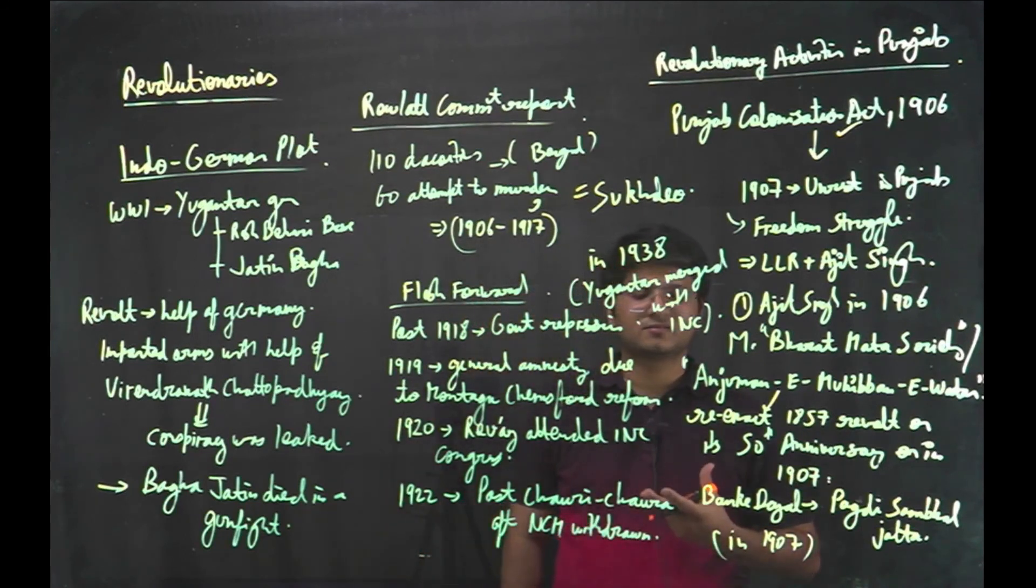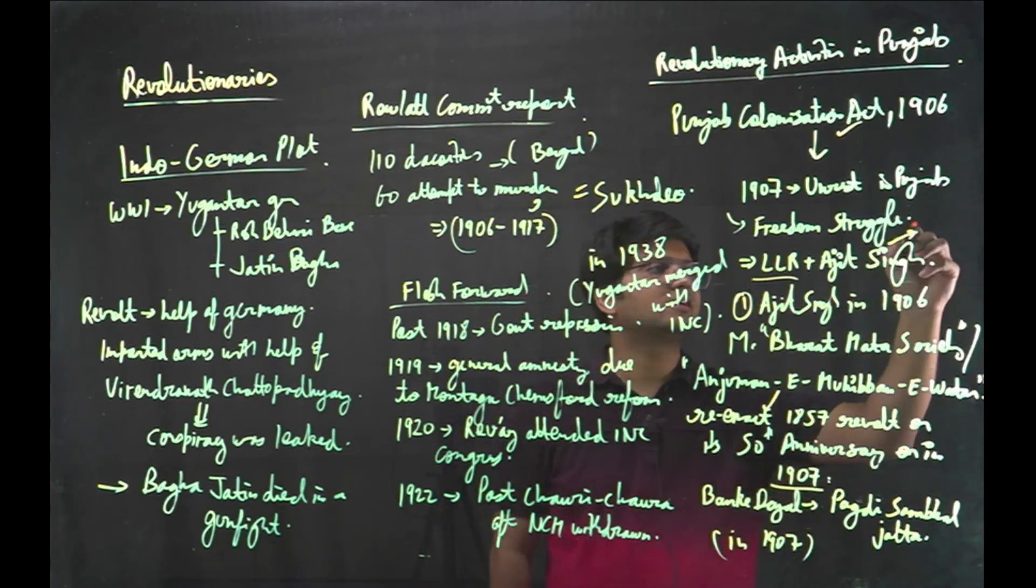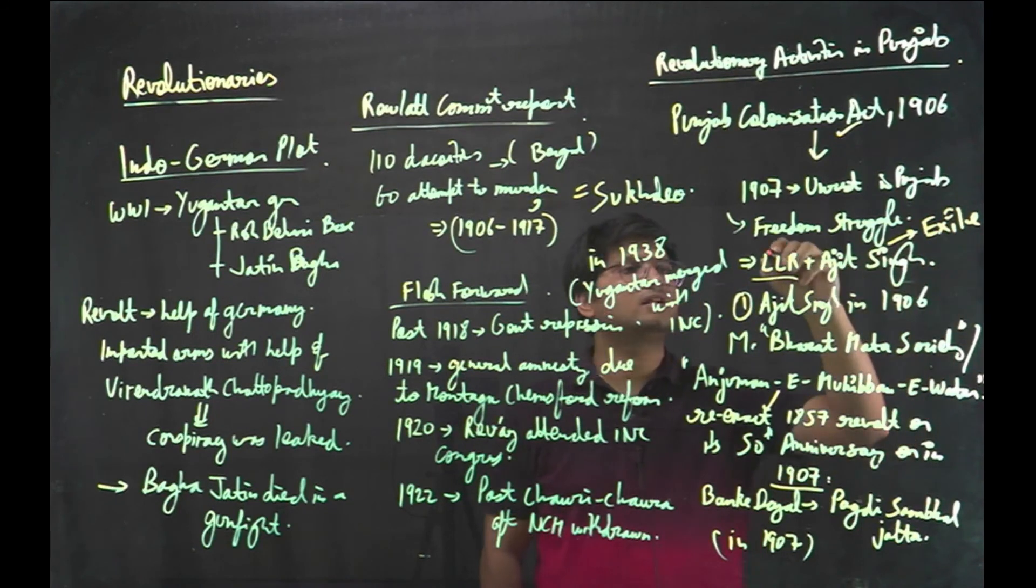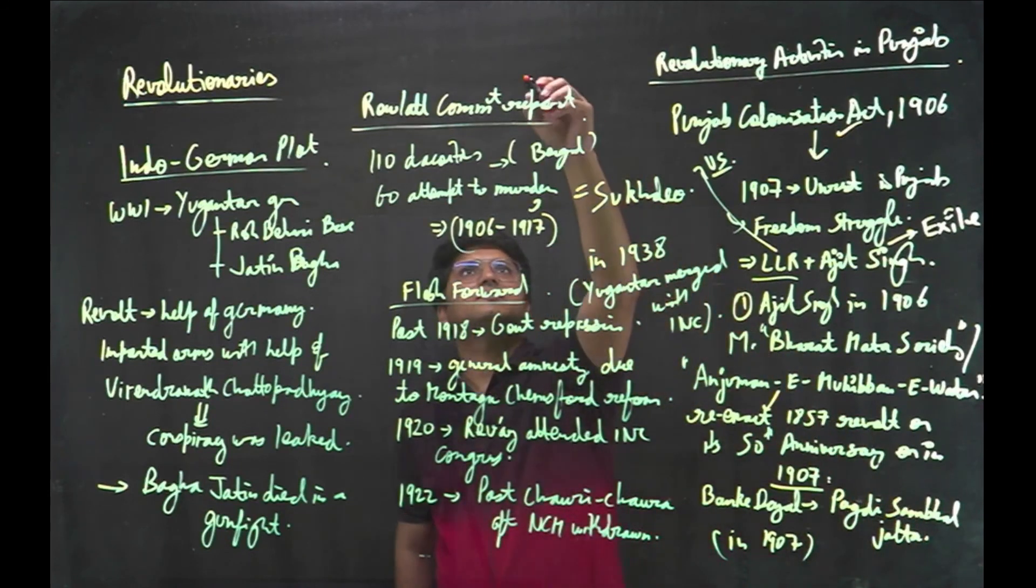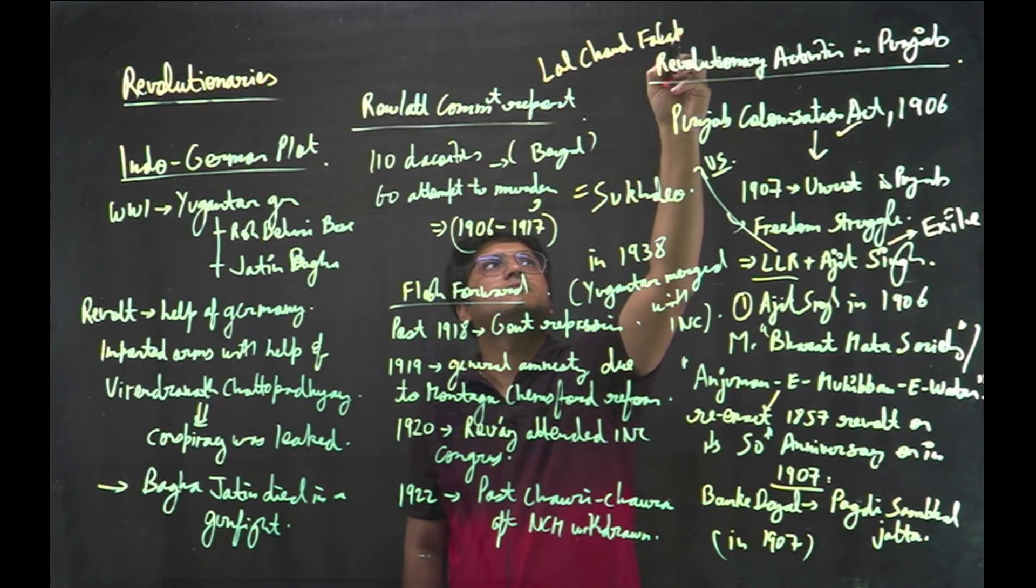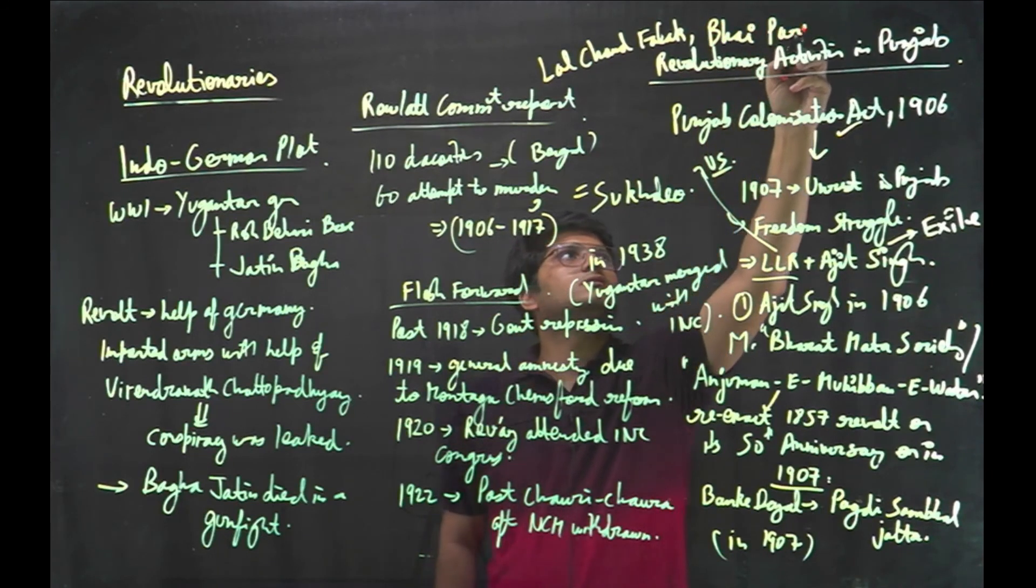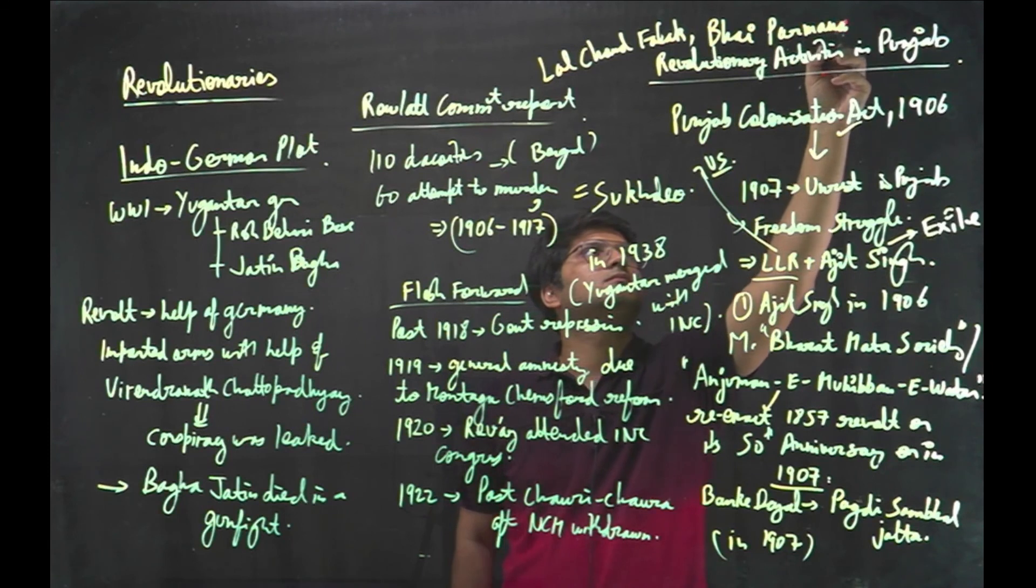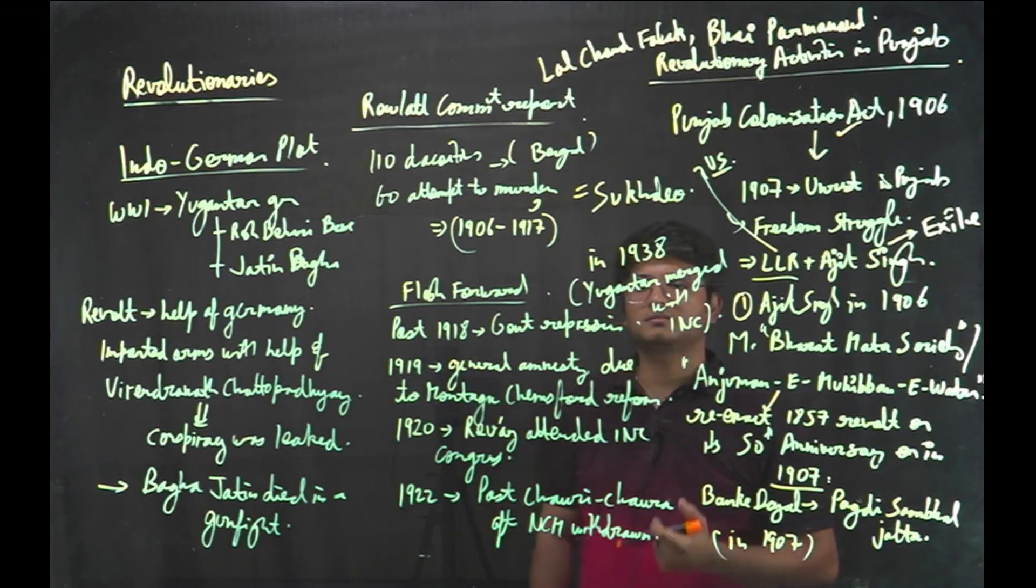And Lala Lajpat Rai went to US. He went to exile in Persia and Lala Lajpat Rai went to US. Lal Chand Falak and Bhai Parmanand are other important leaders associated with the revolutionary activities in Punjab.